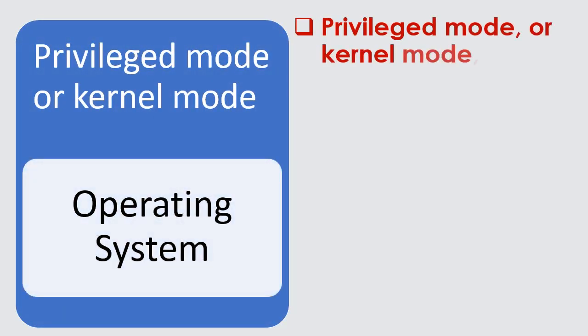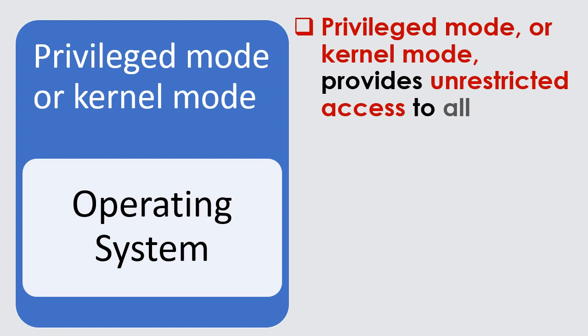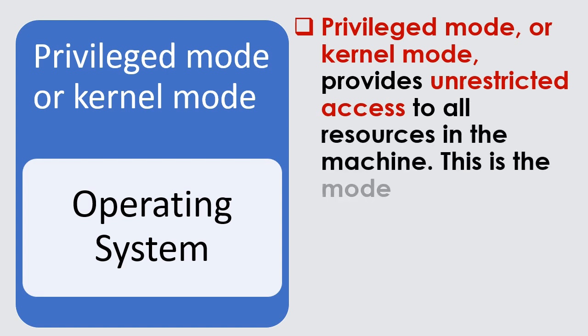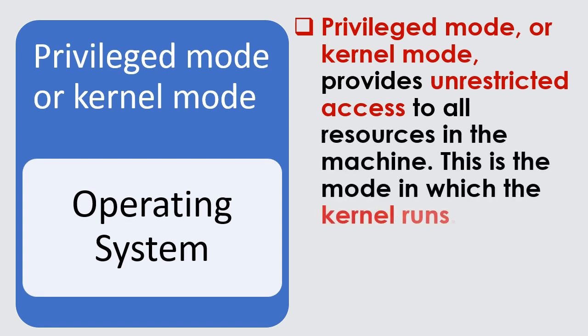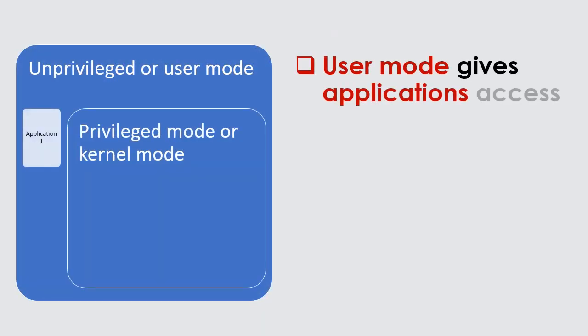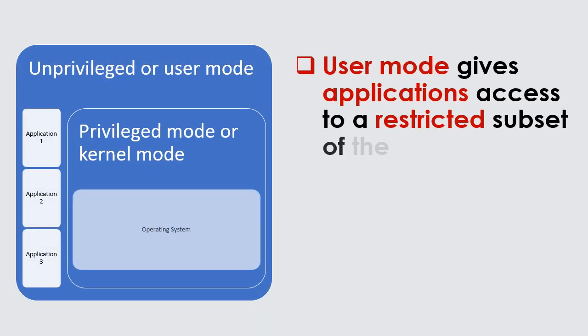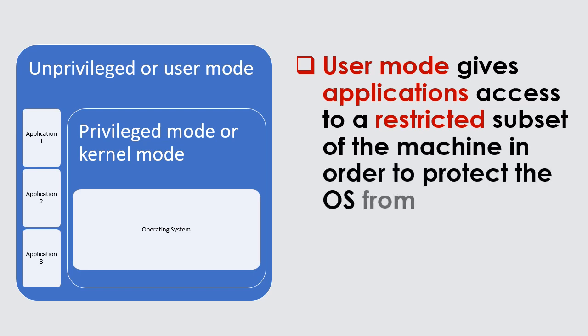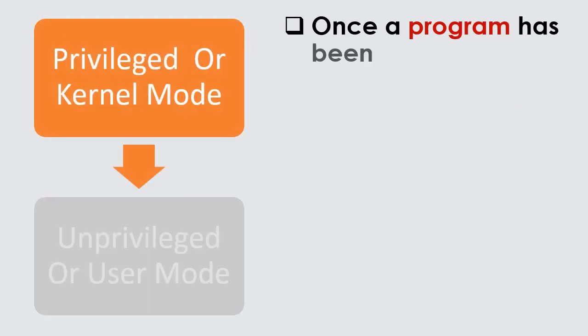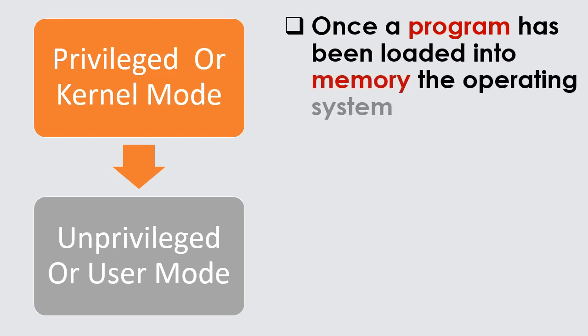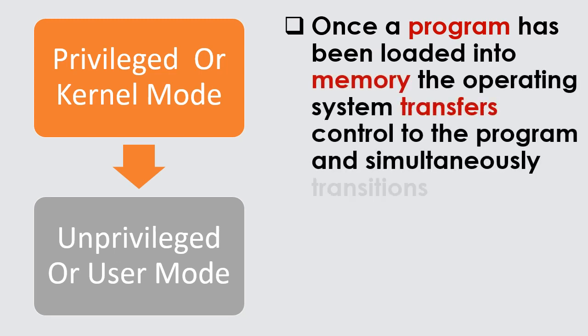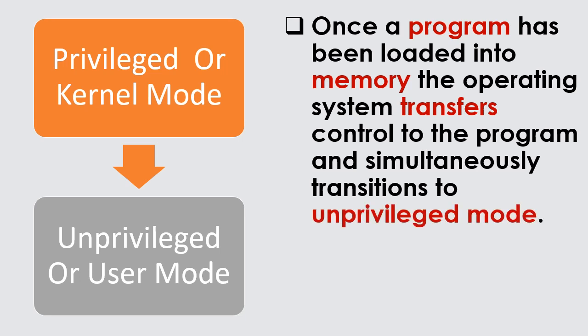Privileged mode, or kernel mode, provides unrestricted access to all resources in the machine — this is the mode in which the kernel runs. User mode gives applications access to a restricted subset of the machine in order to protect the OS from applications. An application can only access memory that the OS has made available to it and should not be able to uncontrollably interfere with or bypass the OS directly. Once a program has been loaded into memory, the operating system transfers control to the program and simultaneously transitions to unprivileged mode.